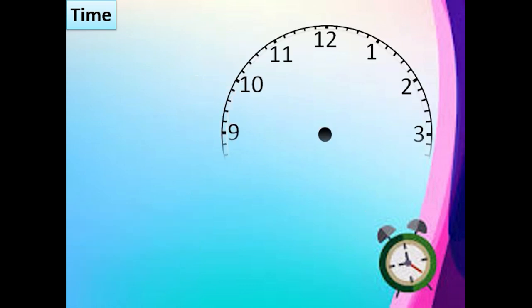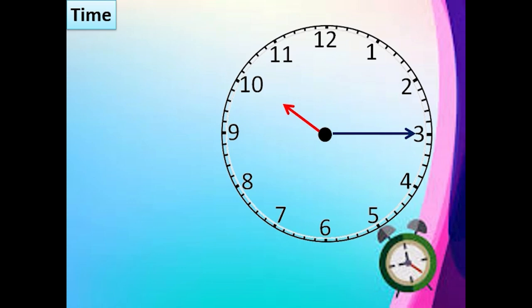Let us learn to read a time now. When the short hand is at 10 and the long hand is at 3 we say it is 10:15 or quarter past 10. When the long hand is at 6, we say 10:30 or half past 10.